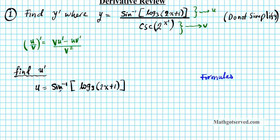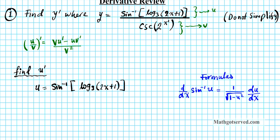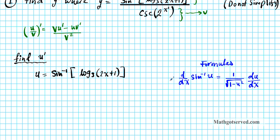Starting from the outermost function, which is the arc sine: d/dx of inverse sine of u — we use u because the argument of the arc sine is itself a function — equals 1 over the square root of 1 minus u squared. Since we're using the chain rule, we append du/dx.